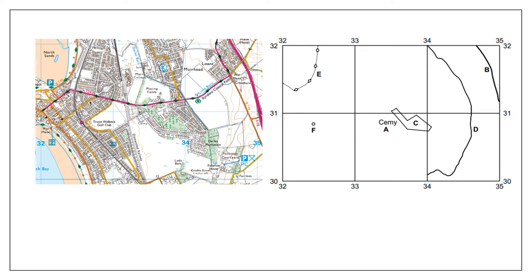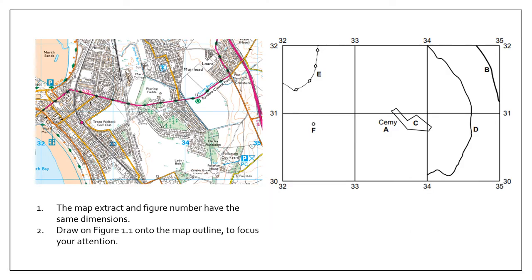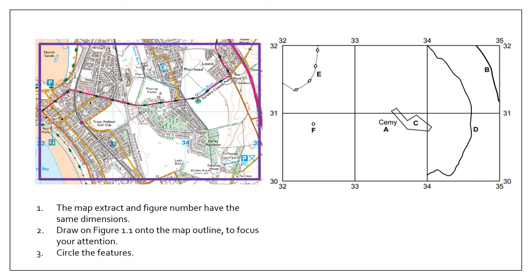An important thing to remember is that the dimensions on your exam paper are exactly the same as on the map extract. For example, these three squares are both 12 centimeters on each map — really important for scale when calculating distances and six-figure grid references. I would actually draw the box of figure 1.1 onto the map to help focus your attention, then circle the various features you have to identify.